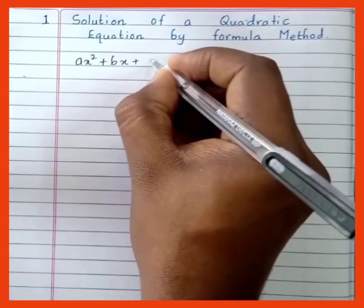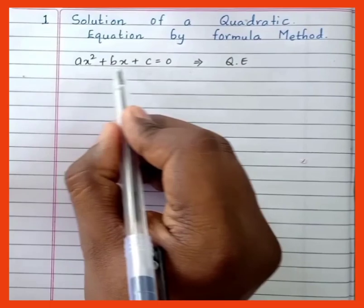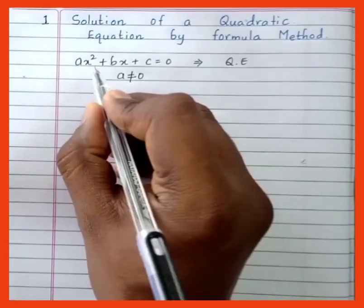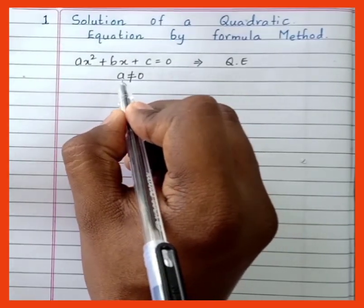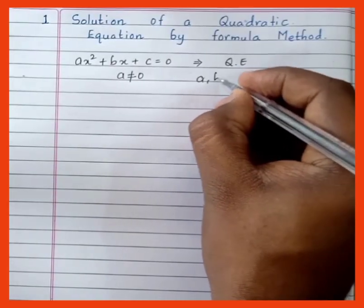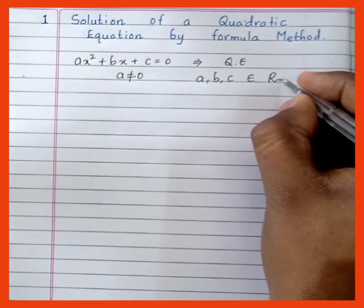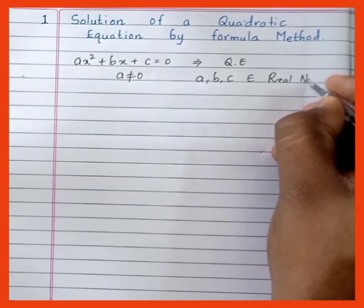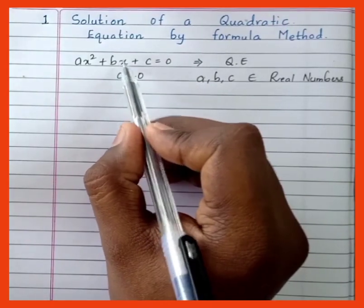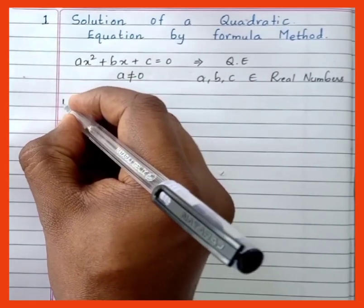The topic is solution of a quadratic equation by formula method, which is a very important two-mark question for the exam. Any equation which is of the form ax² + bx + c = 0 is called a quadratic equation, with the condition that a should not be equal to zero. Here, a, b, and c are real numbers.